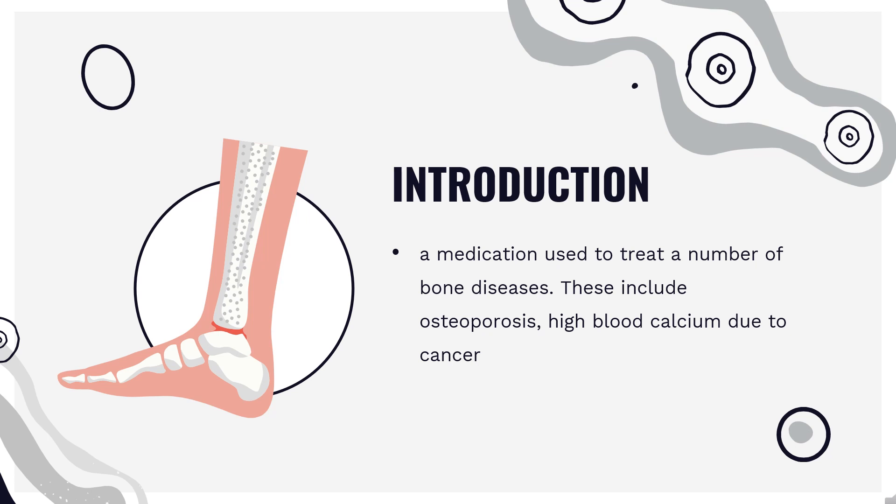These include osteoporosis, high blood calcium due to cancer, bone breakdown due to cancer, Paget's disease of bone, and Duchenne muscular dystrophy. Zoledronic Acid was patented in 1986 and approved for medical use in the United States in 2001. It is on the World Health Organization's list of essential medicines.